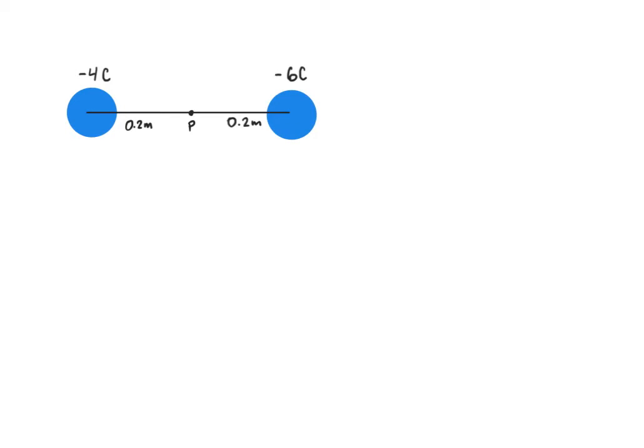So let's go ahead and try a slightly more complicated problem. In this problem I'm going to find the electric field that is directly between a negative 4 coulomb charge and a negative 6 coulomb charge. And so what I'm going to do is start by just drawing my frame of reference and I'm going to say that to the right is positive, to the left is negative, up is positive, and down is negative.